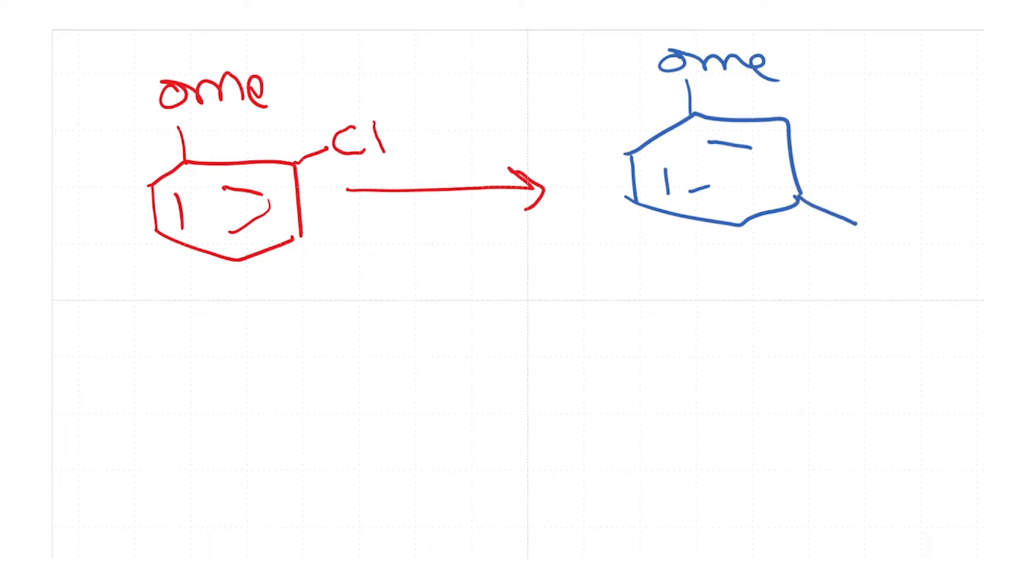Now, the interesting question is that when you have substituted compounds, what would be the outcome? So when you start with let's say methoxybenzene, which is basically anisole with the chloro in the 2 position, we are doing NaNH2 in liquid ammonia. And the product that is formed is the following molecule which is a 1,3 substituted product.